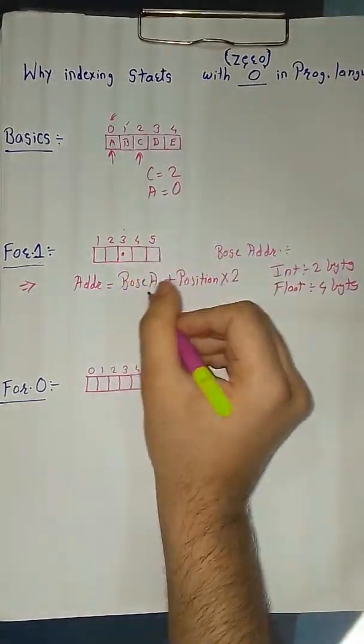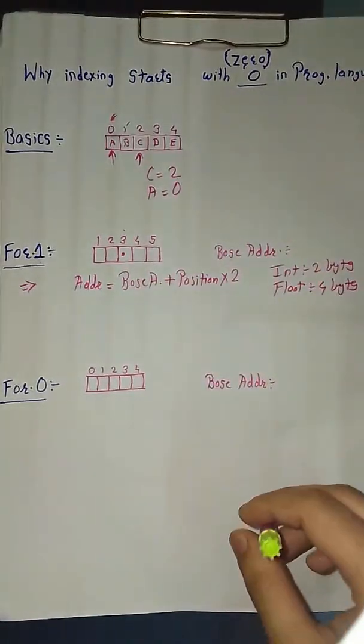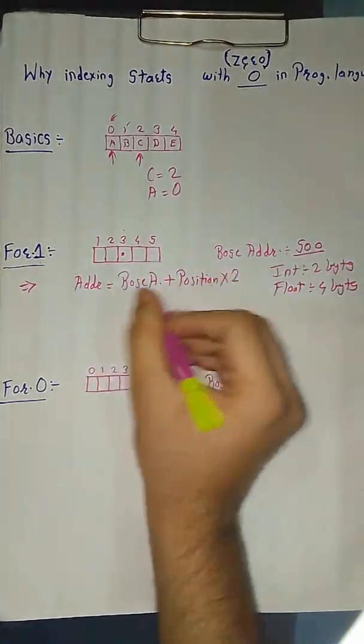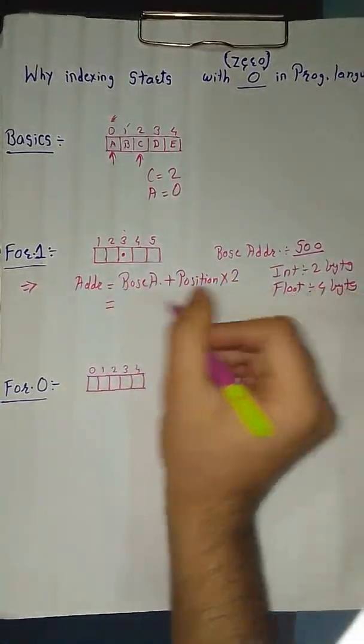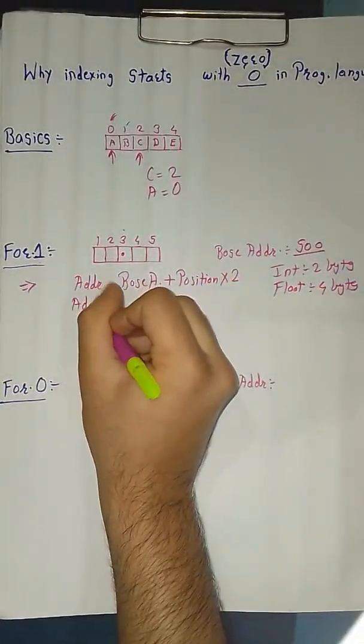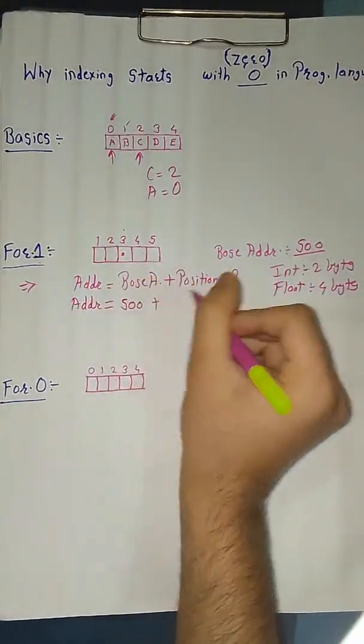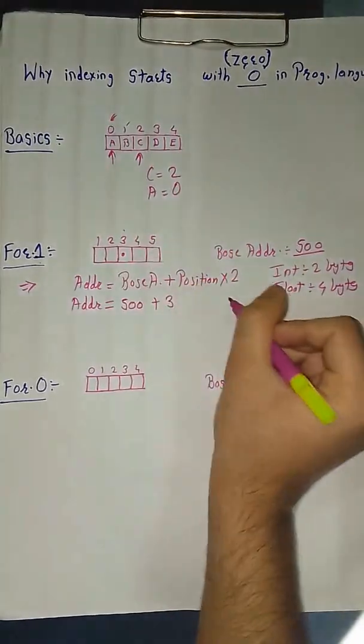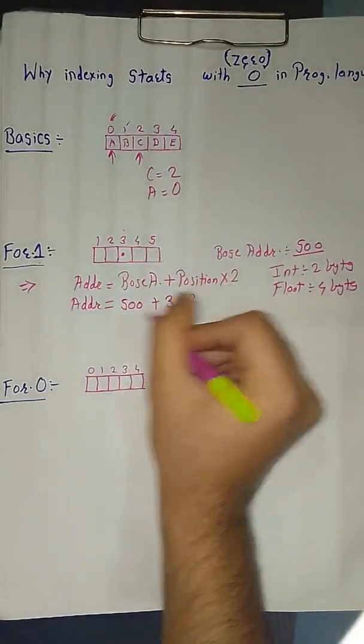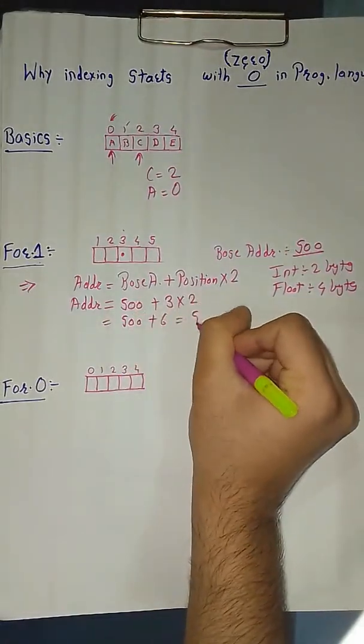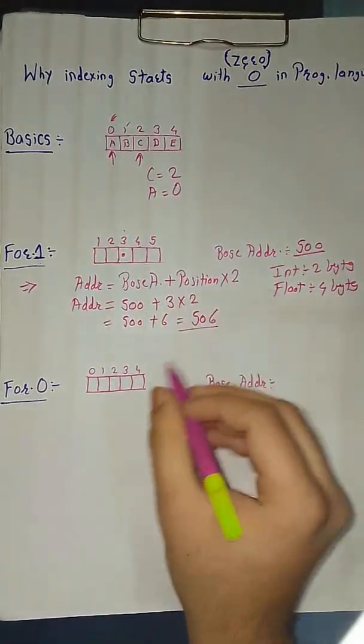Position is 3 and base address, suppose we have taken the base address as 500. Let's find out the address of this. So base address is 500 plus position is third into 2, equals 500 plus 6 equals 506.